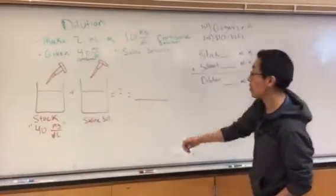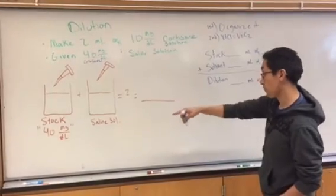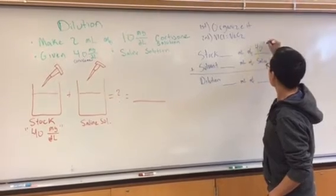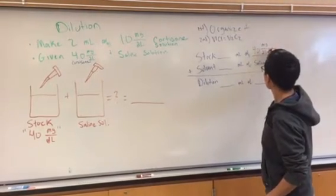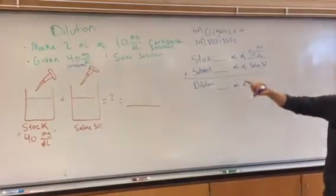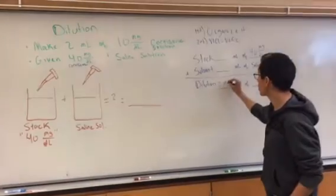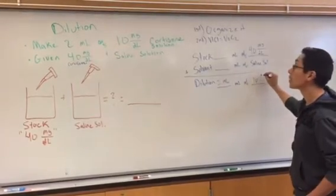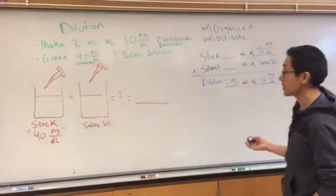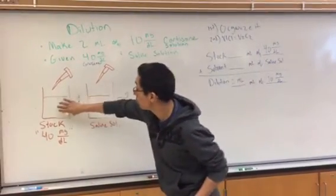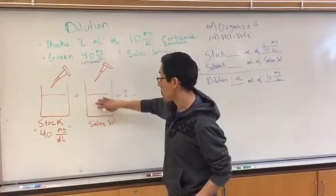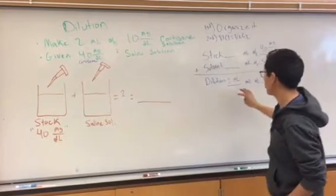What's given to us is our stock, which is 40 milligrams per deciliter, and also our saline solution. But what's required from us is to make 2 milliliters of 10 milligrams per deciliter. So it's basically asking us how much are we supposed to pull using the syringe or barometer, and then also from here to make our dilution.